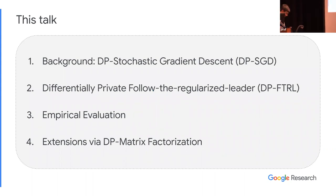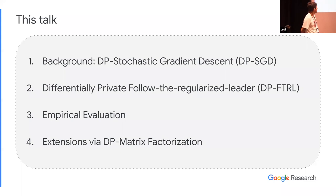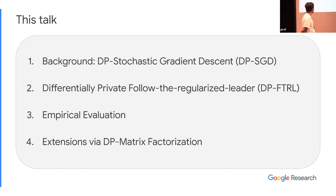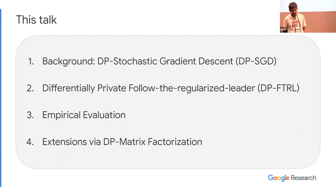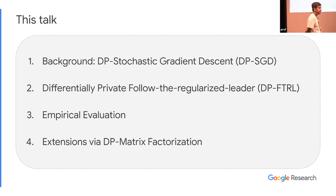The structure of the talk: first, background on differentially private machine learning — specifically DP stochastic gradient descent; then the algorithm DP Follow the Regularized Leader (DP-FTRL), which enabled our deployment; then empirical evaluation on public datasets and the production system; and finally some extensions of this work.